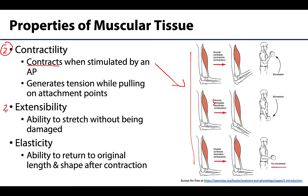Extensibility is the ability of a muscle to stretch without sustaining damage. All muscle can stretch to a certain extent, and some types can stretch quite a bit more than others — for example, smooth muscle can stretch notably more than cardiac or skeletal muscle in certain areas. Lastly, elasticity is the fourth property: the ability of muscle tissue to return to its original shape and length after extension or contraction. You really need this last one for all the others to work efficiently.